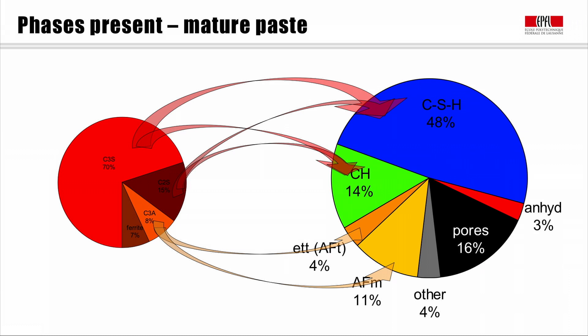But what's really important to see is that CSH is really the most important. In a typical cement paste, mature cement paste, this makes up nearly half of the solid material.